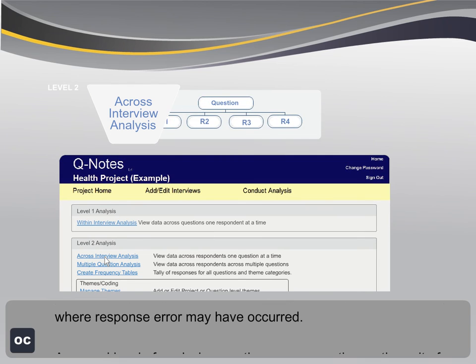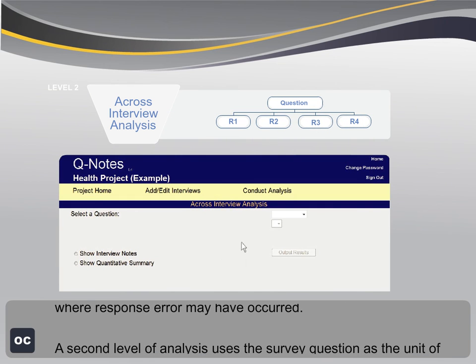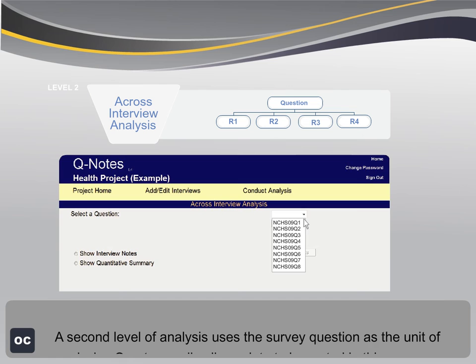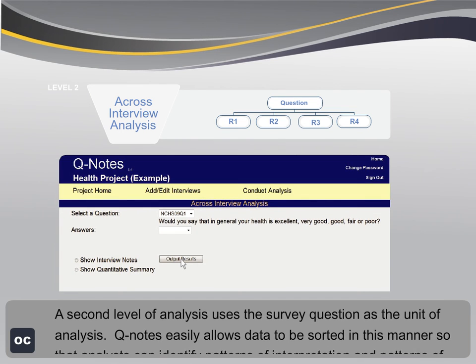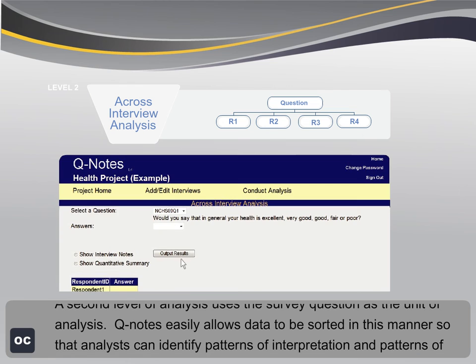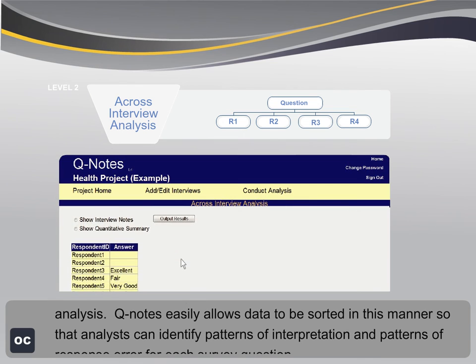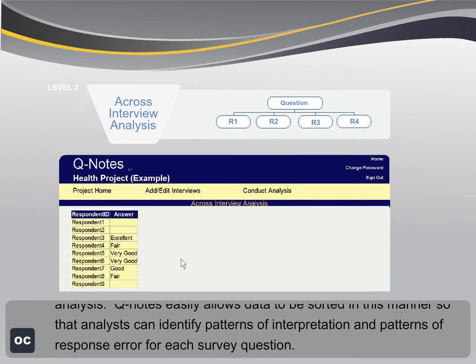A second level of analysis uses the survey question as the unit of analysis. Q-Notes easily allows data to be sorted in this manner so that the analyst can identify patterns of interpretation and patterns of response error for each survey question.